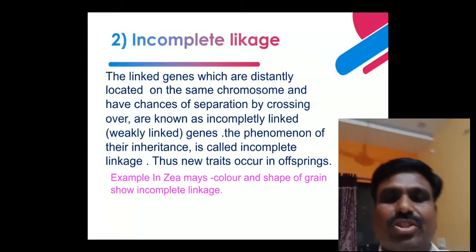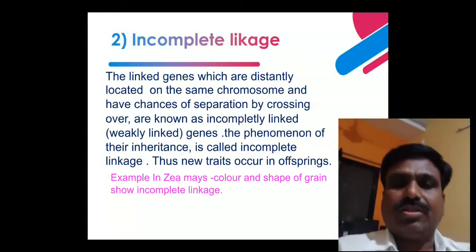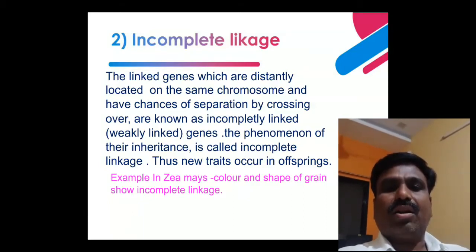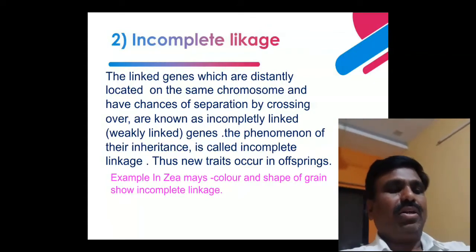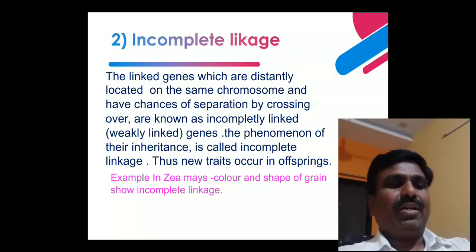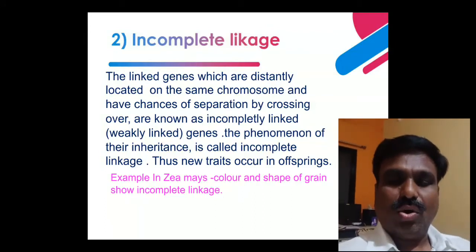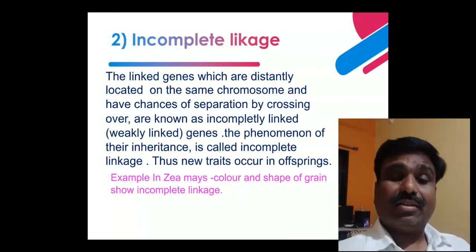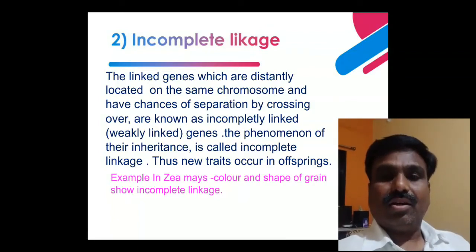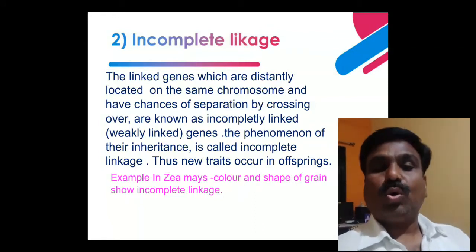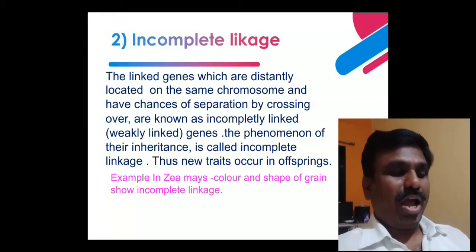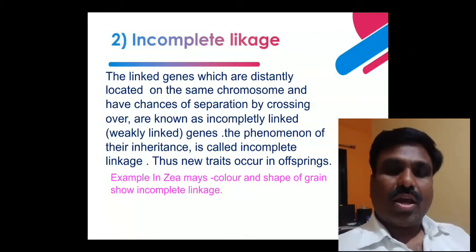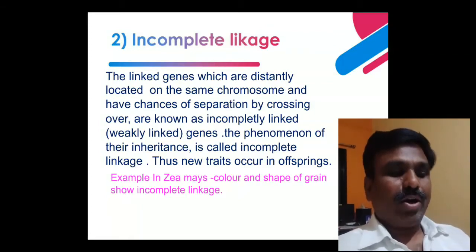In incomplete linkage, the linked genes are not closely located — they are separately or distantly located on the same chromosome. Because they are not closely located, they have a chance of separation by crossing over.